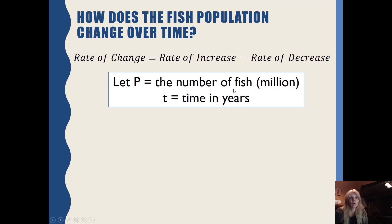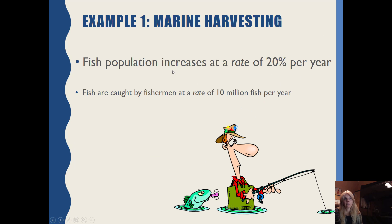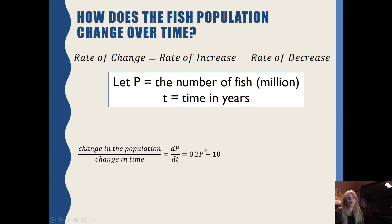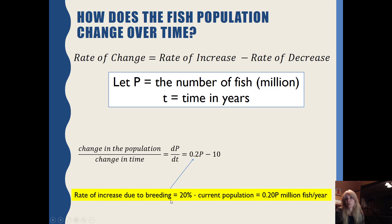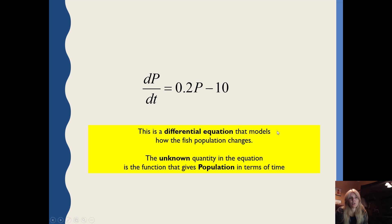If I let p equal the number of fish in millions and t equal time in years, then the change in population over change in time — dp/dt — equals 20% of whatever the population is at that time, which is a function p of t. That's my rate of increase due to breeding: 20% times the current population. Then minus the rate fish are removed by harvesting, which is 10 million fish per year. So this is a differential equation that models how the fish population changes.